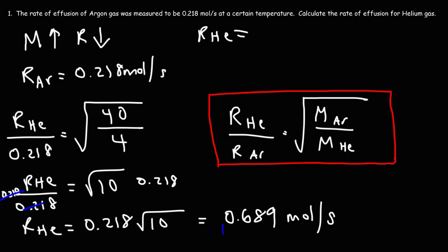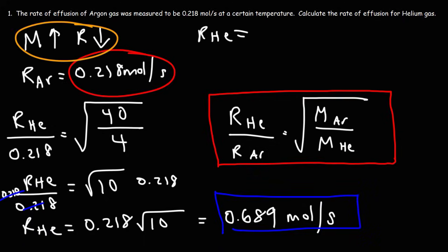The result is 0.689 moles per second. Note that the rate of effusion of helium is significantly greater than that of argon. The reason is that helium is much lighter — because helium has less mass and a lower molar mass, it can effuse more quickly than argon because it moves faster. This illustrates the relationship between molar mass and rate of effusion.